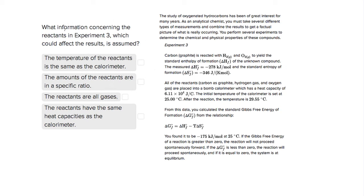The question asks, what information about the reactants in experiment 3, so described in this paragraph, is something that could affect the results, is assumed. So we're looking for something that isn't explicitly stated in the passage, but is assumed to be something important for the experiment.